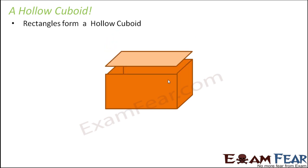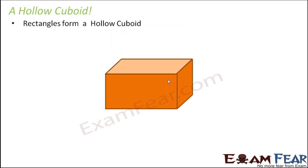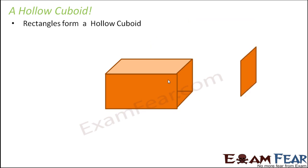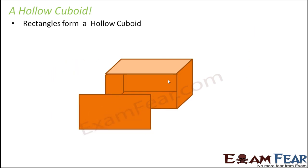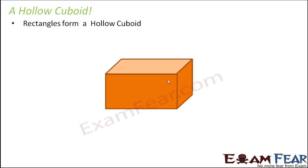How do rectangles form a hollow cuboid? This is how a cuboid looks like — a matchbox. This is one face, which is a rectangle. This is the bottom face, again a rectangle. This is the back face, again a rectangle. This is the side face, a rectangle. The other side face, a rectangle. And finally, the front face, which is a rectangle. So in this case you have a total of six rectangles arranged in this fashion to form a hollow cuboid. Two-dimensional shapes are arranged in some pattern to form a three-dimensional object.